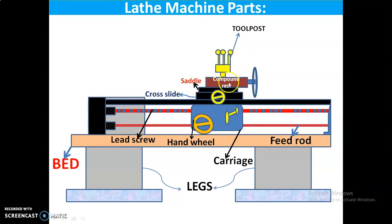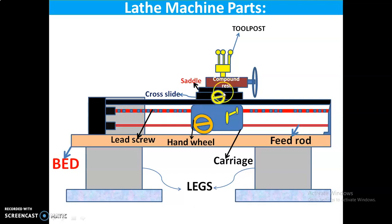Compound rest is present on the top of the cross slide. It supports the tool post and cutting tool in various positions. Compound rest is necessary for turning angles, boring short tapers, and forming operations.